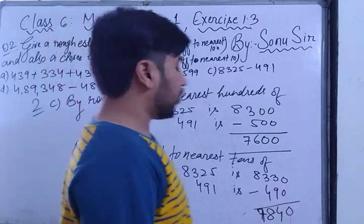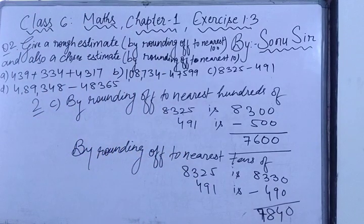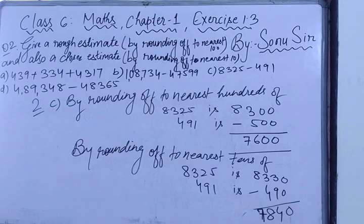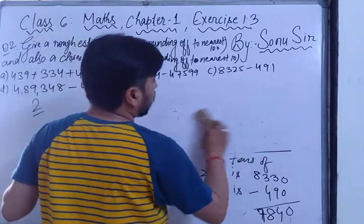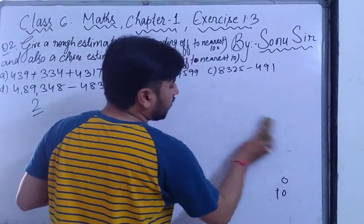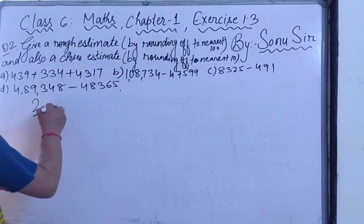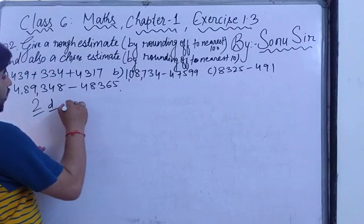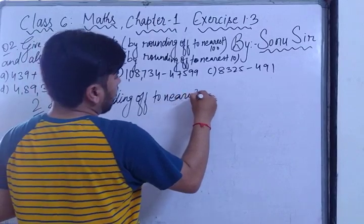I hope all of you understand. Copy this answer. Now let's come to question (d). We have to do subtraction again — the question involves large numbers but we only need to think up to the hundreds and tens place. Write: rounding off to nearest hundreds.